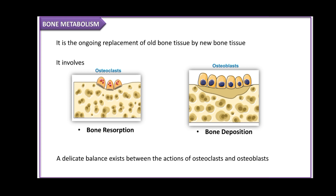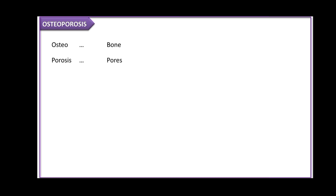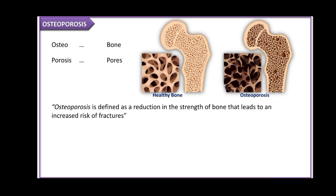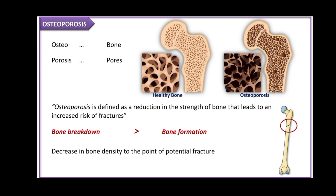If we look at the term osteoporosis: osteo means bone and porosis means pores — it literally means pores in the bones. Osteoporosis is defined as the reduction in the strength of bone that leads to an increased risk of fractures. There is more bone breakdown than bone formation, and a decrease in bone density to the point of potential fracture.